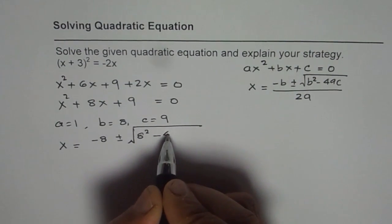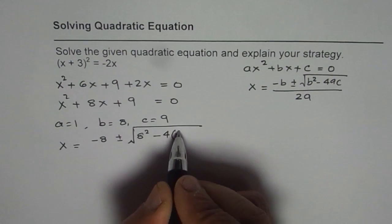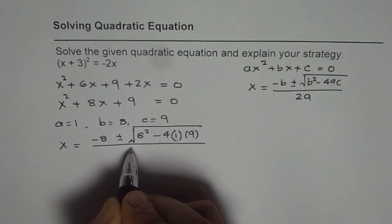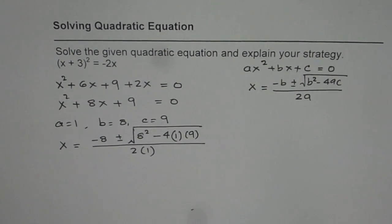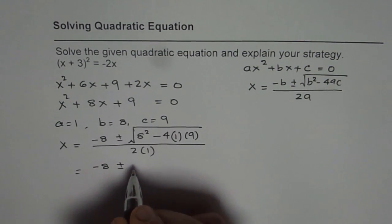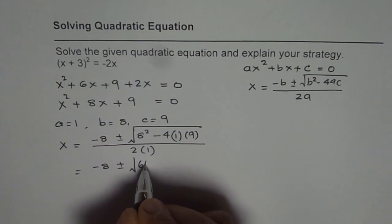minus 4 times a is 1 times c which is 9 divided by 2 times 1 which is a. So let's now figure out what the values are. -8 ± √(8² is 64),